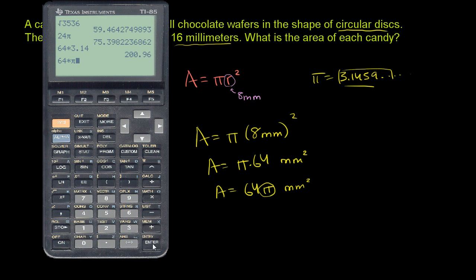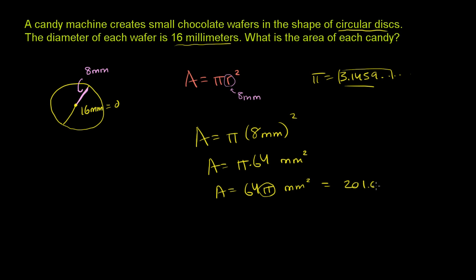So 64 times pi exactly is 201.06. So I'm going to go with this because this is the more precise answer, 201.0 and the more accurate answer, 201.06. So this is 201.06 square millimeters.